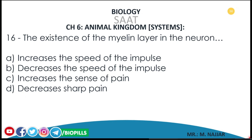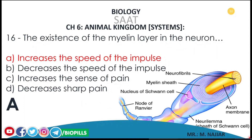The correct answer is a: increases the speed of the impulse. If we are looking here, this is the axon of the neuron. Some of the axons are myelinated, meaning they are covered with the myelin sheath. The myelin sheath is secreted by Schwann cells.